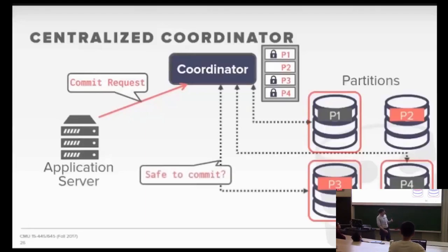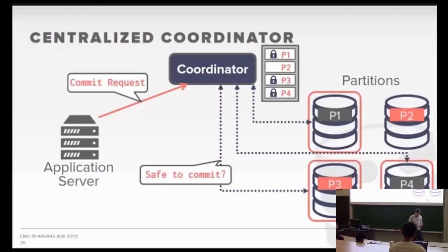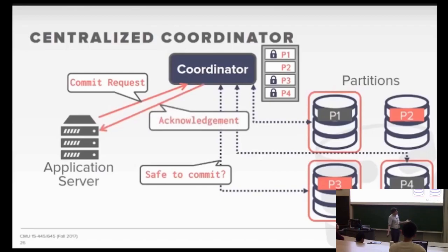When you want to commit, you go to the coordinator, and it coordinates with everyone — all the partitions you modified or accessed — saying this transaction wants to commit, are you allowed to commit? We do it this way because different partitions don't know what you did at other partitions; each one only knows what it did locally and can only make a decision based on what it sees. Once everybody commits, you get back an acknowledgement that your transaction is done.